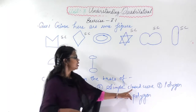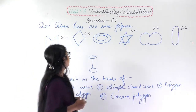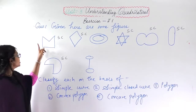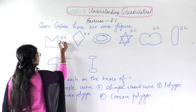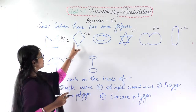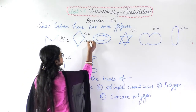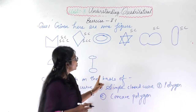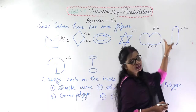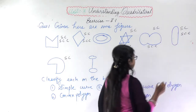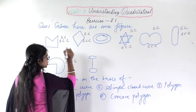The second category is simple closed curve. From the simple curves, we check if they are closed. The first figure is made of line segments and is closed — simple closed curve. The second is also closed and made of line segments — simple closed curve. The third is not even a simple curve, so it will not be a closed curve either. The fourth and fifth are also simple closed curves made of curves forming a closed loop. The sixth is also a simple closed curve.